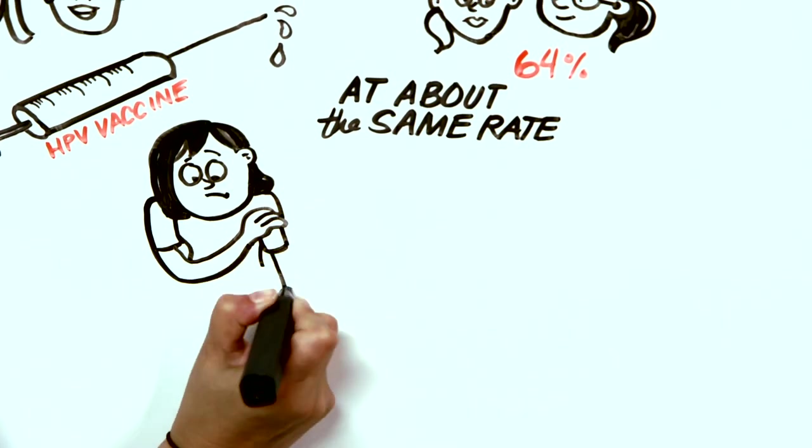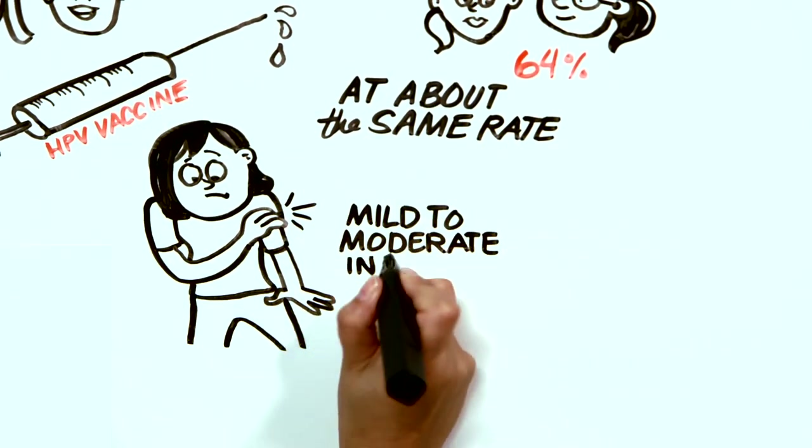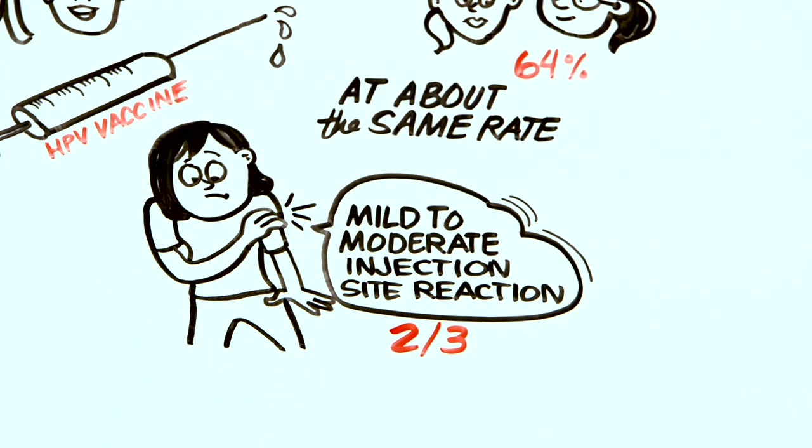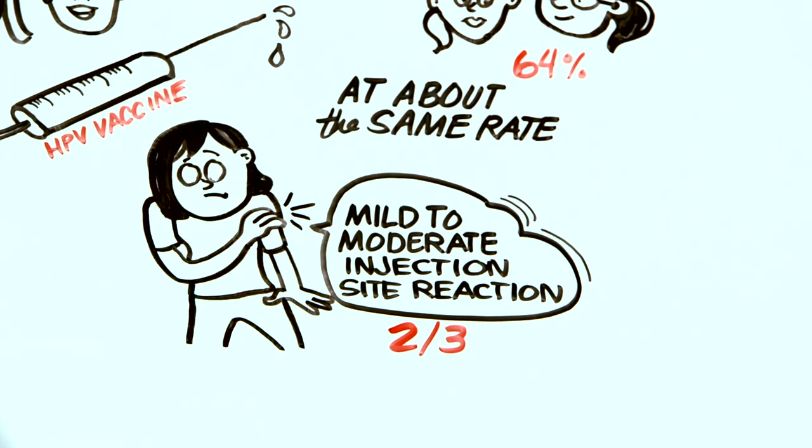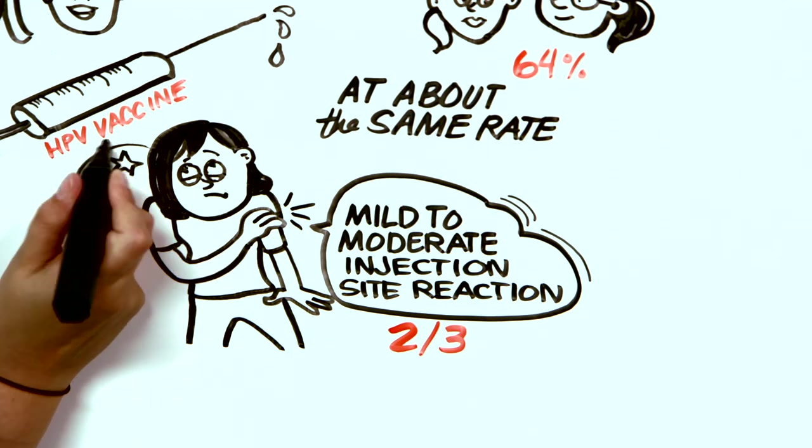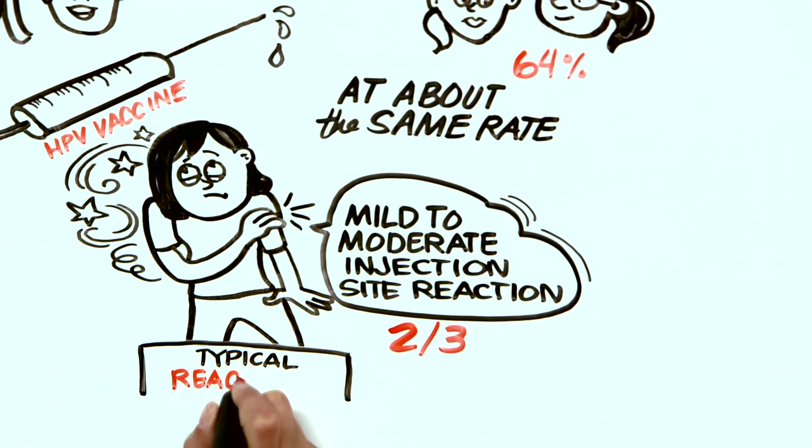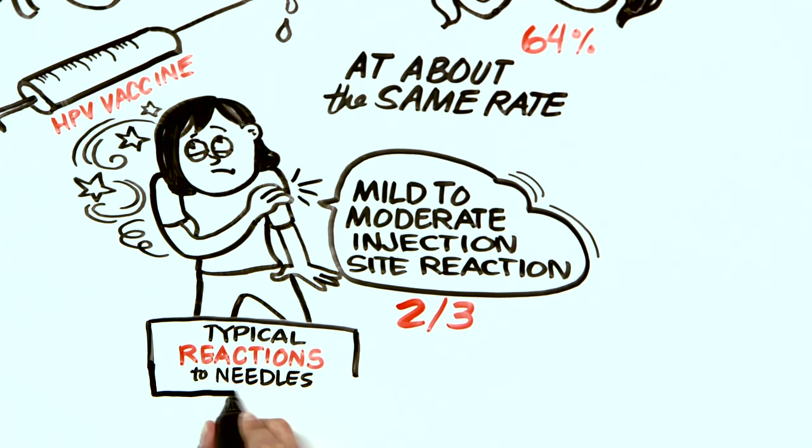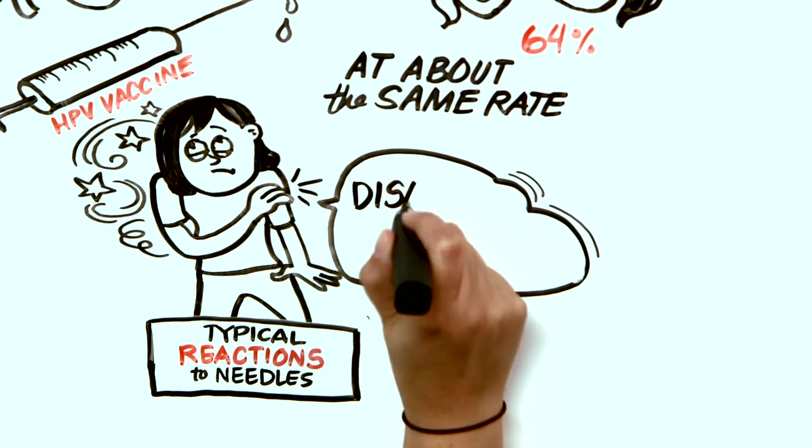But about the same rate whether they got the HPV or fake shot. The outcome that differed most between the two groups was mild to moderate injection site reactions. About two out of three people reported mild to moderate pain, redness, and swelling. These reactions, along with the occasional fainting, are pretty classic when we inject people, as they are a downside to injectable vaccines in general. They usually disappear in two days.